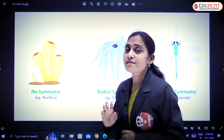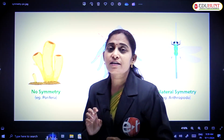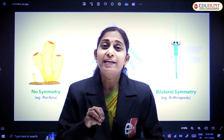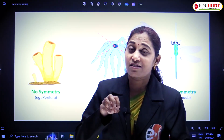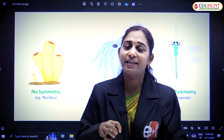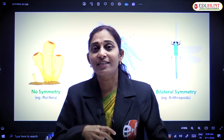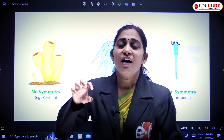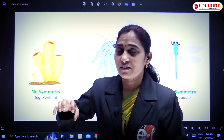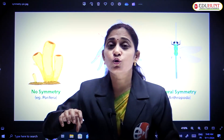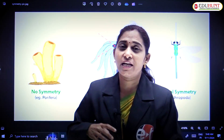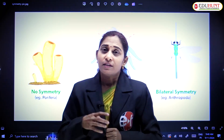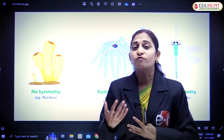These animals with radial symmetry are especially solitary as well as sedentary animals. Sedentary animals do not have locomotion — they are attached to some substratum or bottom. That's why they can't move in search of food.